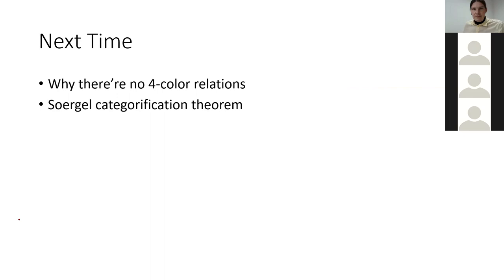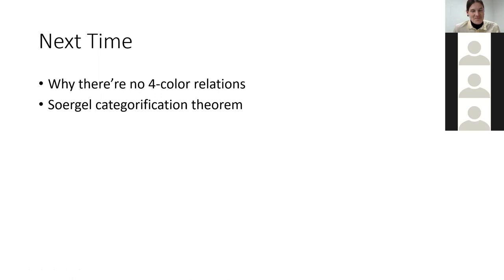Thank you very much, that was a very nice talk. Are there any questions? As you pointed out, next time it will be explained why a priori there are no four-color relations. The book gave a hint that we can consider the decategorified version, which only has two-color relations, so that's why we have three here. But a priori it's not clear why it should be true.